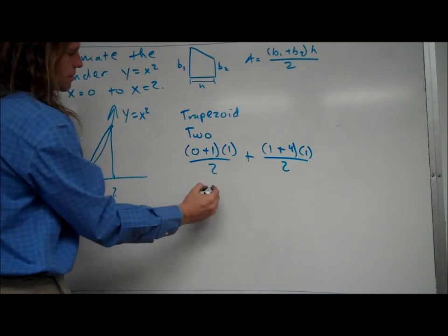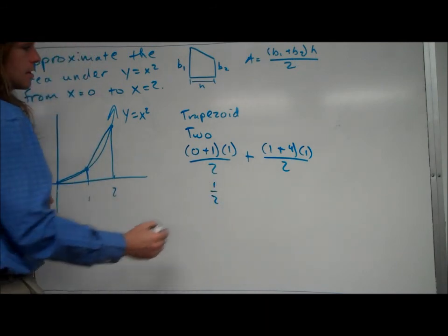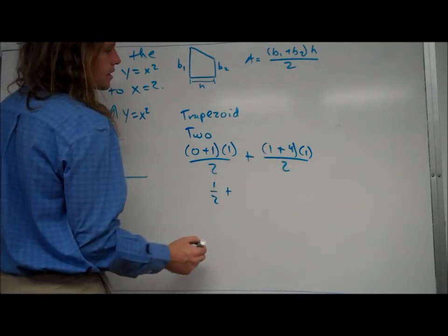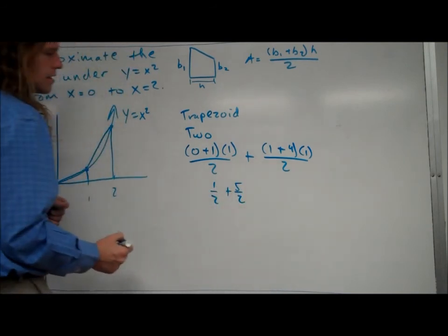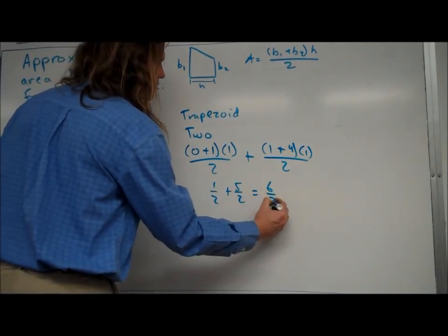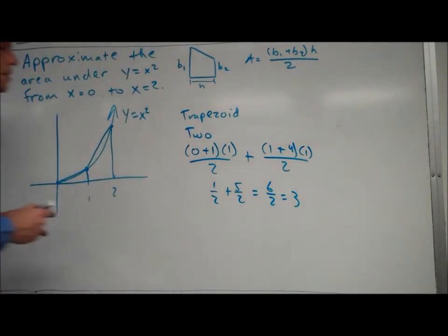So now we just add these together. So this is going to be one-half plus, that's going to be five-halves, and we end up getting six-halves, which is three. All right, so we end up getting three as our approximation using the trapezoids. And so that's all four of the methods. Now, with this one, obviously you could use more trapezoids, just like with the other ones as well. And then we're going to look at the chart. There we go.